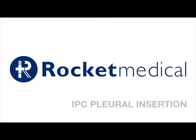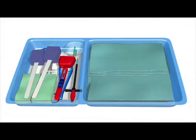The Rocket IPC insertion pack is ideal for use in most clinical settings and includes all the items routinely required for insertion of an indwelling pleural catheter. A dedicated pack is available if placing the catheter following thoracoscopy.